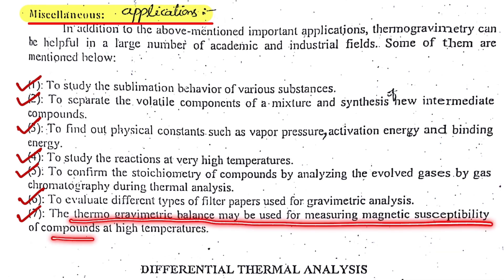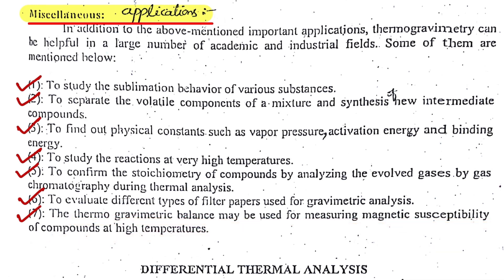A thermogravimetric balance may also be used for measuring magnetic susceptibility of a compound at high temperatures — determining how much magnetic interaction with an external magnetic field is possible, and whether a compound retains its magnetic properties at a particular temperature. All this information is obtained from thermogravimetric analysis or the thermogram obtained through TGA.